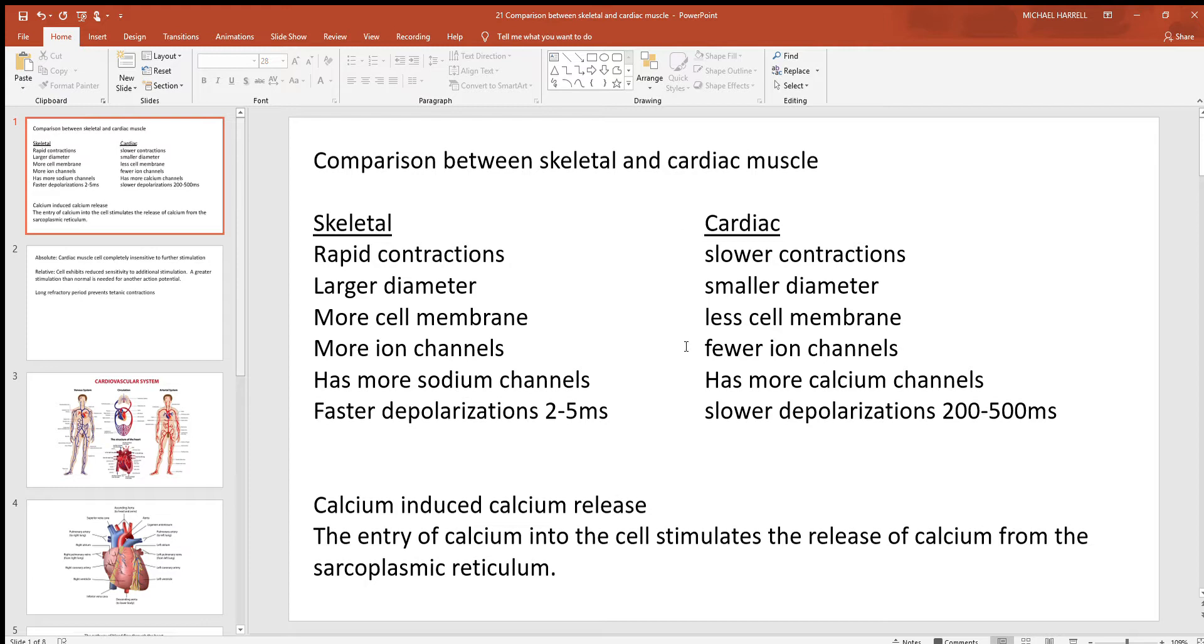But again, with cardiac, with fewer ion channels, and they also rely more on the movement of calcium, that's less abundant in the extracellular environment. So with fewer ion channels, moving more calcium, you're going to get much slower movement of ion. The slower the ion moves in, the slower the depolarizations. And notice it takes about 100 times longer for a cardiac cell to depolarize.